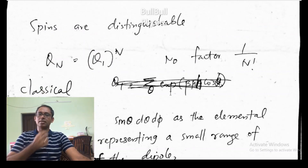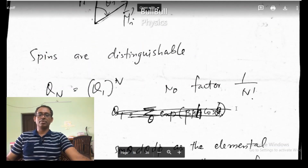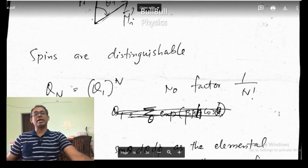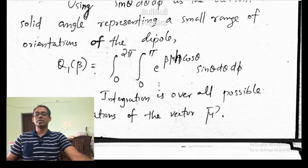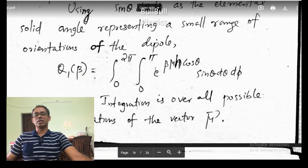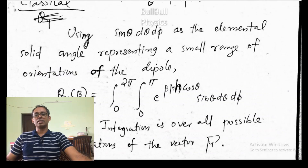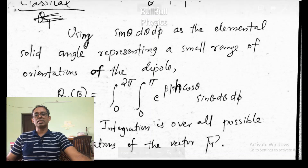The spins are distinguishable. So Q_N is Q_1 to the power N, and since they are distinguishable, we are not using the 1/N! factor here. So using this, this is the classical way of calculating the single-particle partition function: integral from 0 to 2 pi.